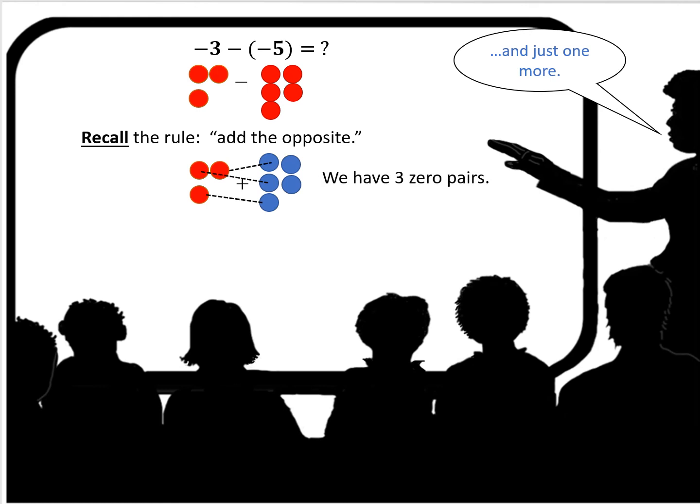So I keep those negative 3 chips and then I add and I'm going to add the opposite of negative 5 which is going to be positive 5 and that's where I get the 5 blue chips. So now we make our zero pairs and as you can see there are 3, 3 zero pairs.